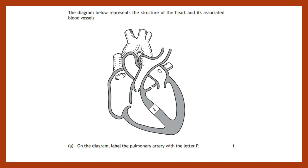Try one of the past paper questions — pause the video and come up with your answer. Here you have a diagram of the heart and its associated blood vessels, and you've been asked to label the pulmonary artery with the letter P.